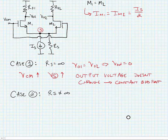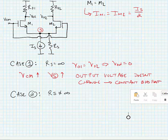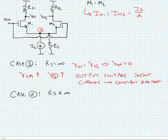Now let's look at the case where RS is not equal to infinity, so it's something lower than infinity. What happens here? Well, we still expect that because of the symmetry of the circuit, IM1 is still equal to IM2.